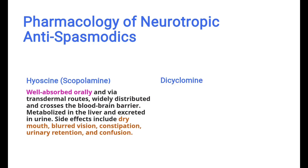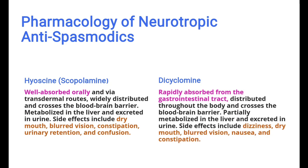Second, dicyclomene: it is rapidly absorbed from the gastrointestinal tract, distributed throughout the body, and crosses the blood-brain barrier. It is partially metabolized in the liver and excreted through urine. Side effects include dizziness, dry mouth, blurred vision, nausea, and constipation.